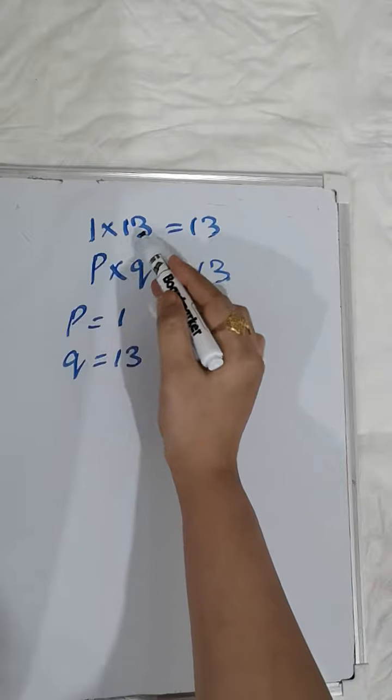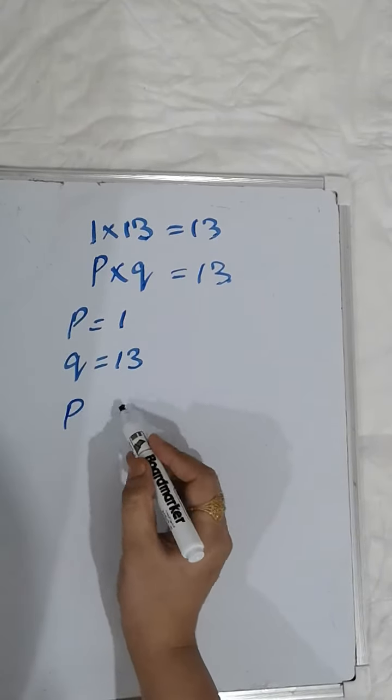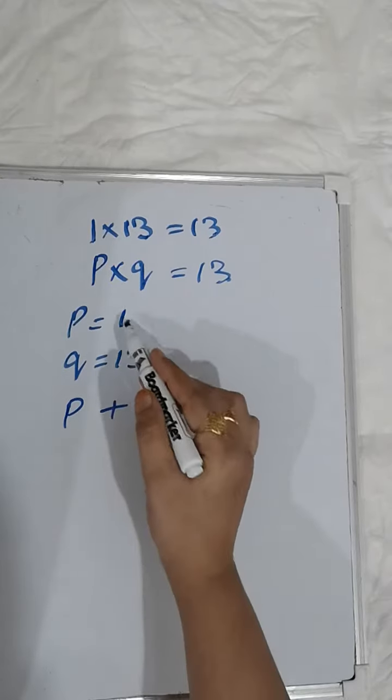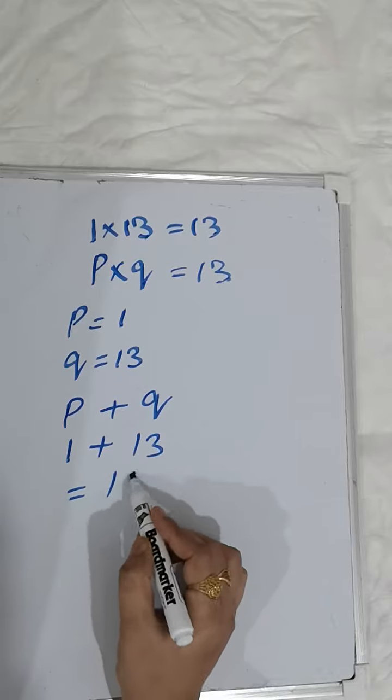It doesn't matter which we assign to P and which to Q because we have to find the sum of the numbers. So we can find the sum of P and Q by adding these two numbers: 1 plus 13, which equals 14.